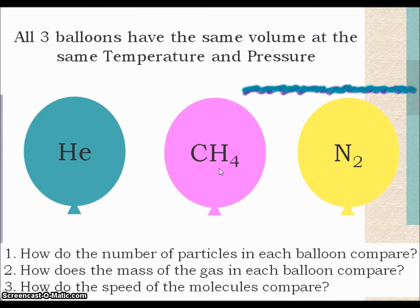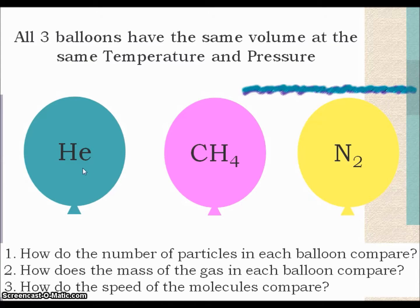Let's take a look at what you said. If they all have the same volume, then they must have the same number of particles — that's the correct answer for the first question. For the second one — how does the mass in each balloon compare? Well, if I've got the same number of particles, they're actually not going to have the same mass, because helium atoms are lighter than methane molecules. So my helium balloon is going to have less mass than my methane balloon. That's why my helium balloon floats. And the nitrogen is also going to have a different mass, so all three have different masses.